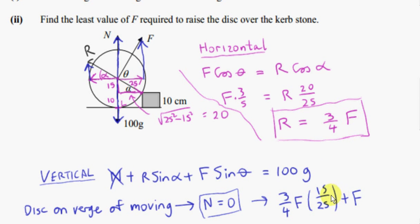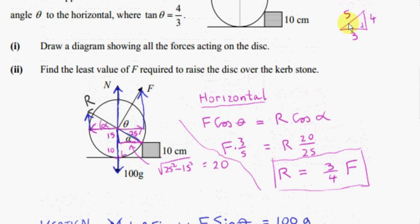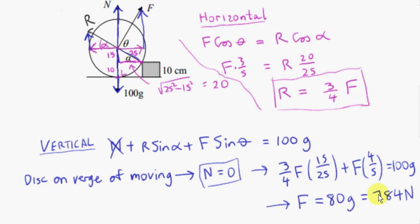We get everything in terms of F. Sine of alpha is opposite over hypotenuse: 15 over 25. Then we have F times sine of theta. Tan of theta was four-thirds, so sine of theta is four-fifths. Solving this equation gives F equals 784 Newtons. That is the least amount of force required for the contact force on the disc due to the ground to become zero.